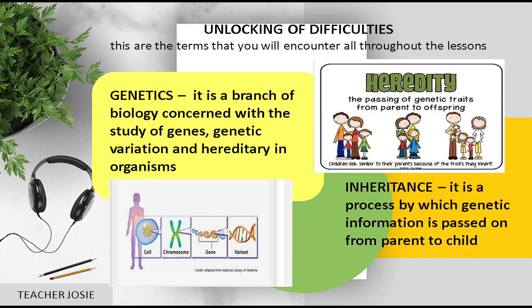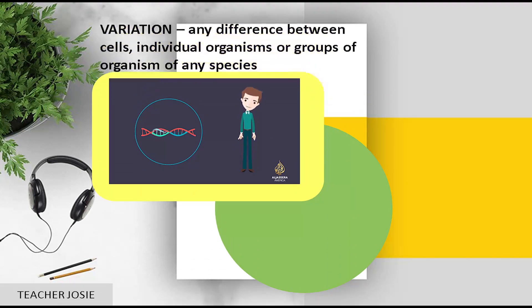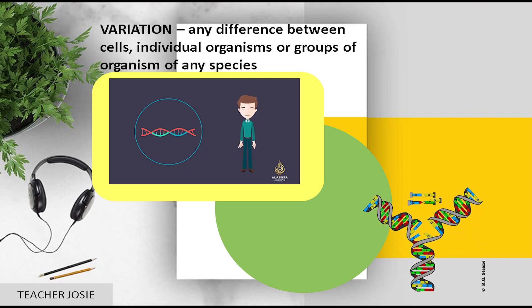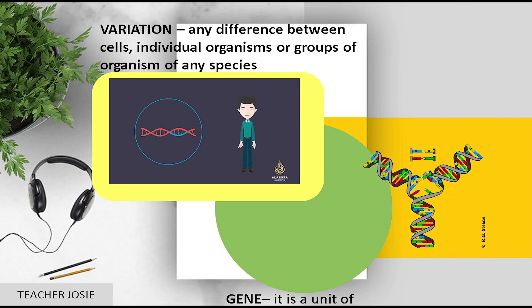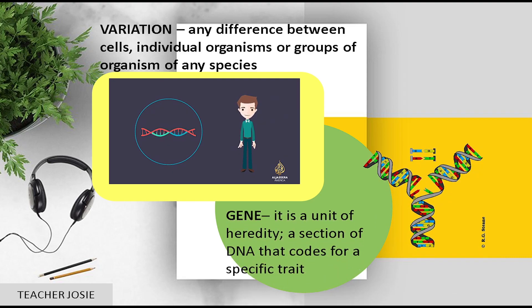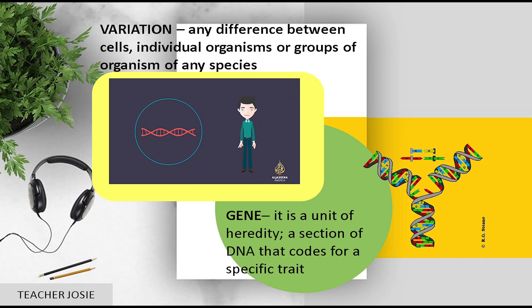Inheritance — it is a process by which genetic information is passed on from parent to child. Variation — any difference between cells, individual organisms, or groups of organisms of any species. Gene — it is a unit of heredity, a section of DNA that codes for specific traits.